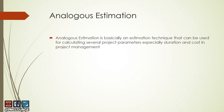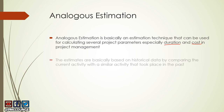Analogous estimation is basically an estimation technique that can be used for calculating several project parameters, especially duration and cost. This is where in project management the technique is used most. The estimates are based on historical data by comparing the current activity with a similar activity that took place in the past, and then you come up with an estimate of how much time or cost it will take.